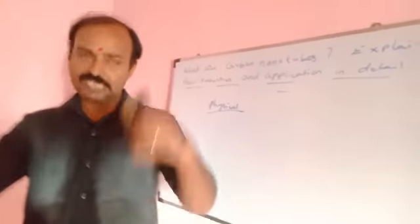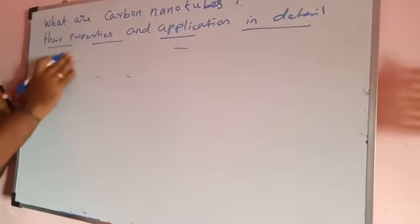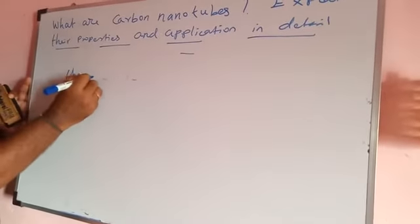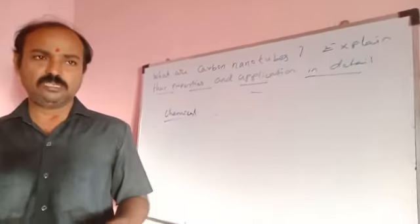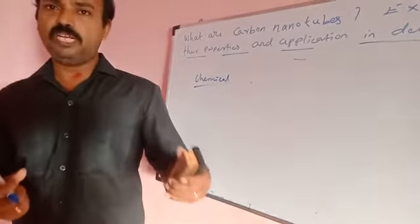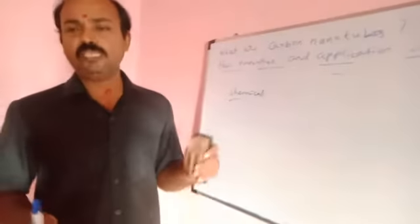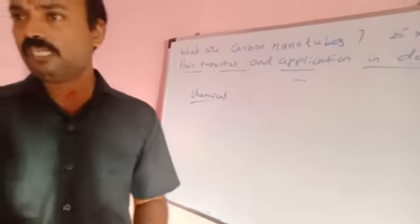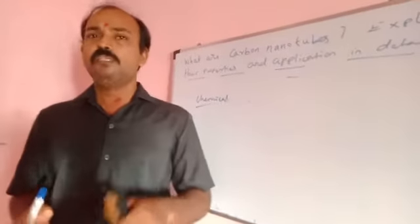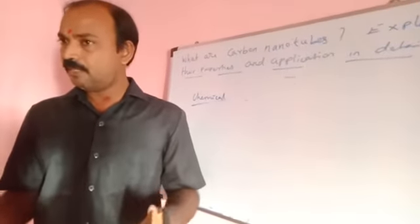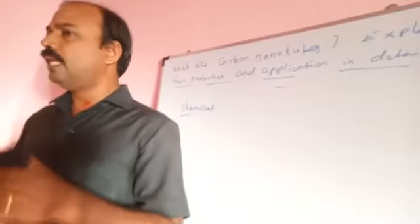The mechanical properties are also related to strength — carbon nanotubes are very strong. The chemical properties include high resistance to oxidation — it is difficult to oxidize carbon nanotubes. That high resistance to oxidation is a very important chemical property. The electrical properties include high electrical conductivity.